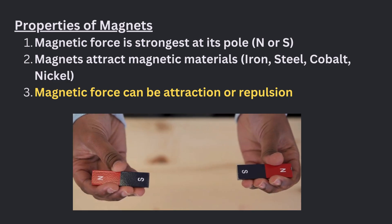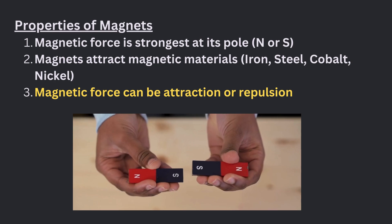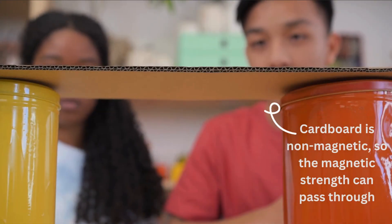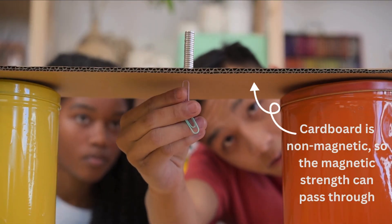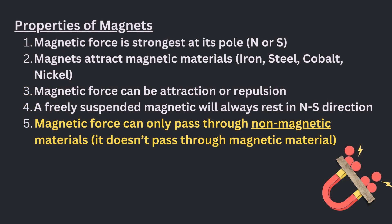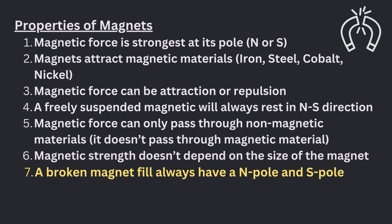Magnetic force can be attraction or repulsion. For a freely suspended magnet, it will always rest in a north-south direction. Magnetic force can only pass through non-magnetic materials — magnetism cannot pass through magnetic materials. Magnetic force is not dependent on the size of the magnet. A broken magnet will always have north and south poles.